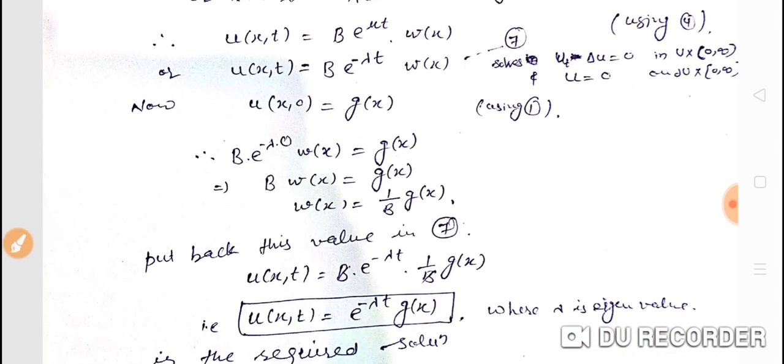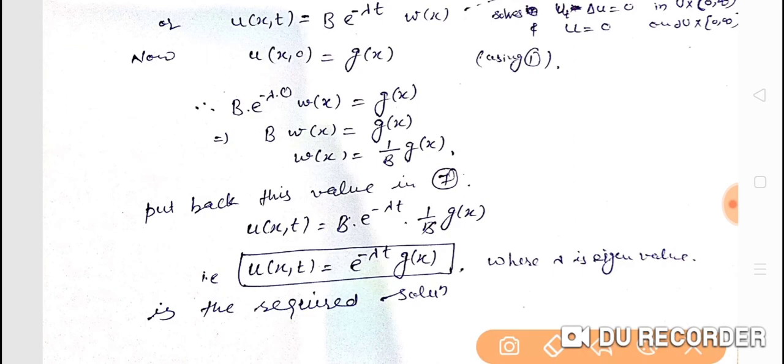Putting this value back, we get u(x,t) equals b times e^(-lambda t) times (1/b) times g(x). The b cancels, giving u(x,t) equals e^(-lambda t) times g(x), where lambda is the eigenvalue. This is the solution of our problem.